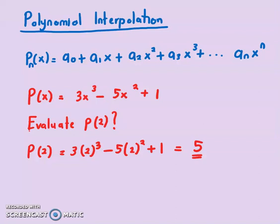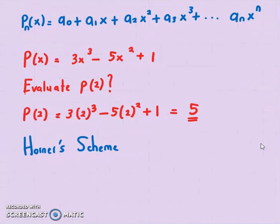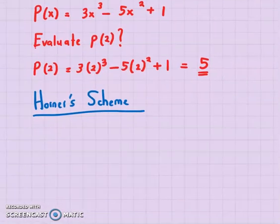Now, is there another way to solve this? Another way to solve this is using Horner's scheme. It's very easy and you can do it very fast. So for example, for this polynomial, let's look at the introduction first. How do you use Horner's scheme?